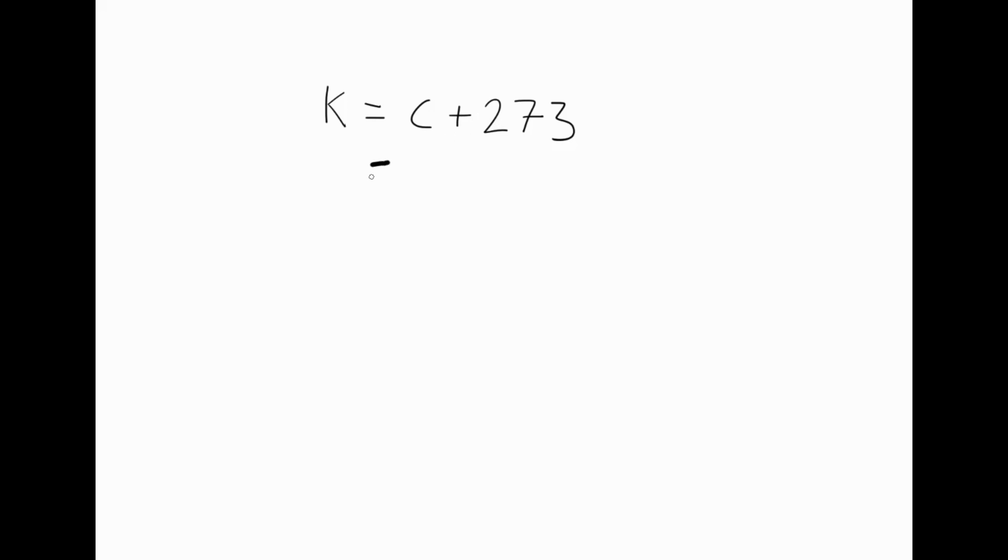So what we'll do is we'll write C plus 273 subtract 273. But what we've done is we've subtracted 273 from this side, so we must do the same on this side. So we don't just write K anymore, we write K subtract 273. So we've subtracted 273 from both sides. Now if we look at this side, we can see that we've got add 273 subtract 273, so they cancel each other out, so we're left with C by itself.